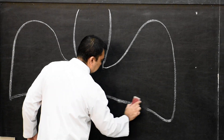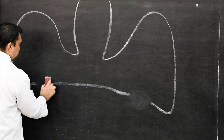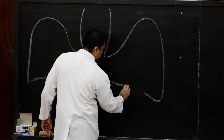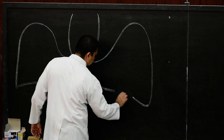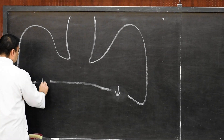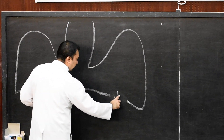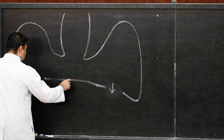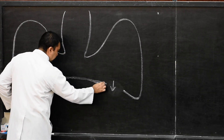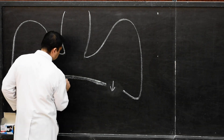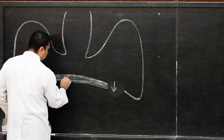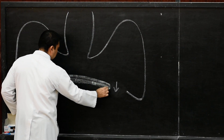Break this line at this level and at this level. Here there will be an opening — mark it with an arrow. Here also, this is an opening, so mark with an arrow. These two will be the pleural peritoneal canals. What will be the septum transversum? This will be the septum transversum — I will highlight it with the green color.